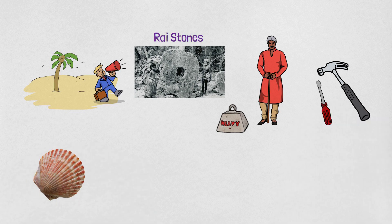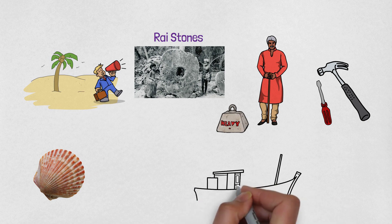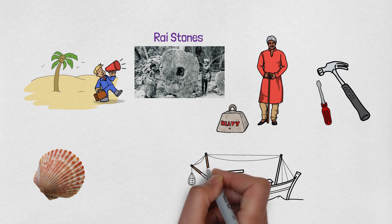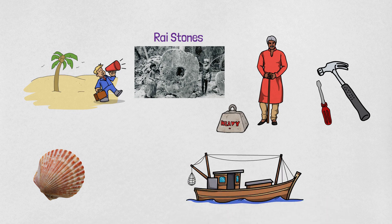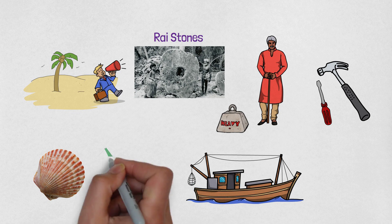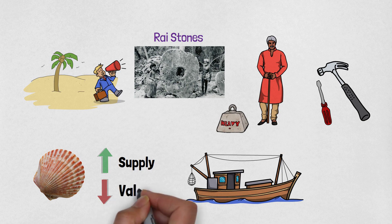Primitive people were also using seashells as a method of payment. Seashells were very rare because there were no advanced ships and no technology to reach them. But when they were used as money, people developed better ships and technology to reach them so they increased the supply of seashells and consequently decreased the value of each of them.